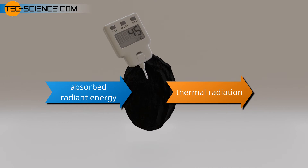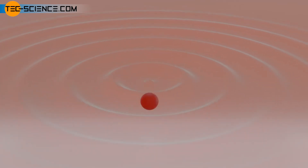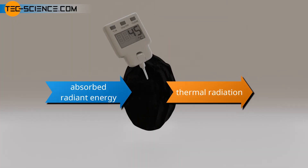As already explained, every object must emit a certain thermal radiation depending on its temperature; otherwise it could not be explained why partial or complete absorption of radiant energy leads at some point to thermal equilibrium. Even if by definition a blackbody absorbs all incident radiation, it still emits radiation. However, this is not reflected radiation, but radiation which the body emits due to the oscillation of atoms — radiation emitted from inside, so to speak. Note that the definition of a blackbody is only that all incident radiation is absorbed, and not that it cannot emit any radiation.